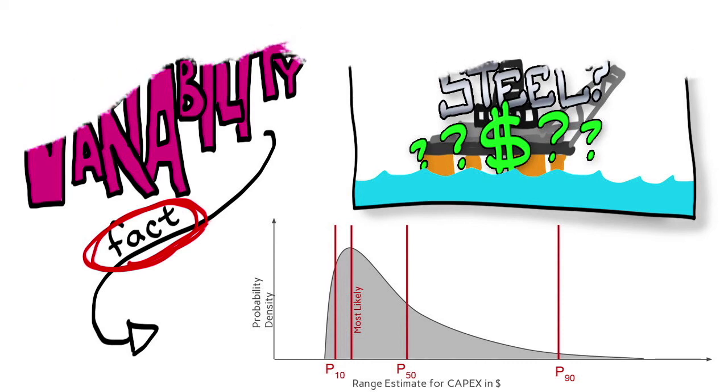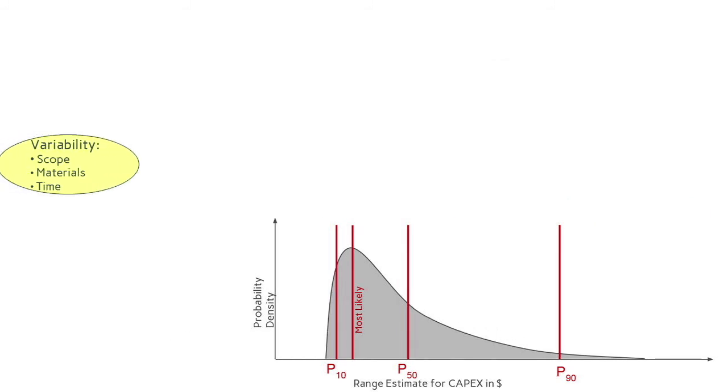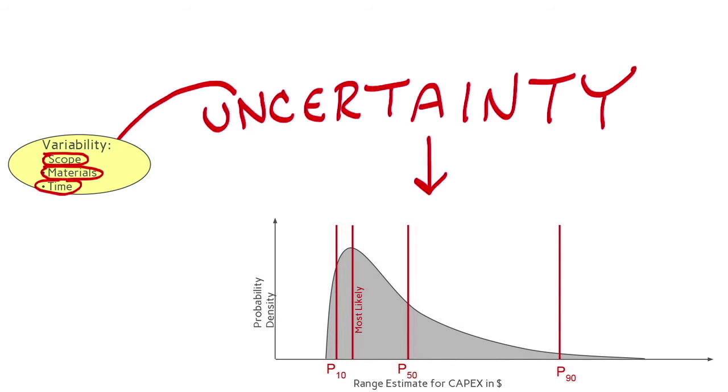Taken together, this is a type of variability in the cost of steel, and a source of uncertainty in the cost estimate. There are many such items in any cost estimate, and they are an important source of uncertainty.